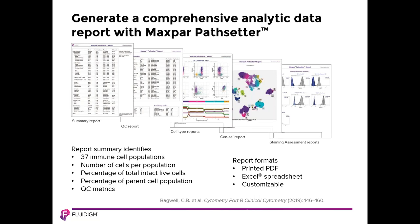Maxpar PathCenter software automatically analyzes data in as little as five minutes. A report of results is automatically generated. The report summary identifies 37 immune populations, the number of cells per population, the percentage of total intact live cells, and the percentage of parent cell populations, as well as a QC matrix. The report can be printed as a PDF or viewed in an Excel spreadsheet. This report can also be customized to the researcher's needs.